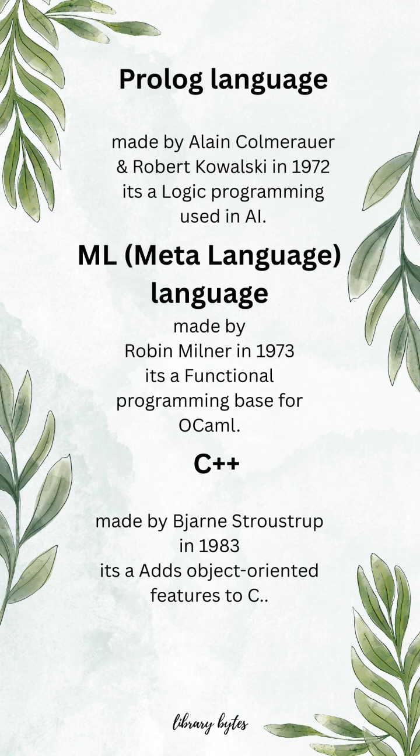Prolog, made by Alain Colmerauer and Robert Kowalski in 1972. It's a logic programming language used in AI. ML (Meta Language), made by Robin Milner in 1973. It's a functional programming language and the base for OCaml.